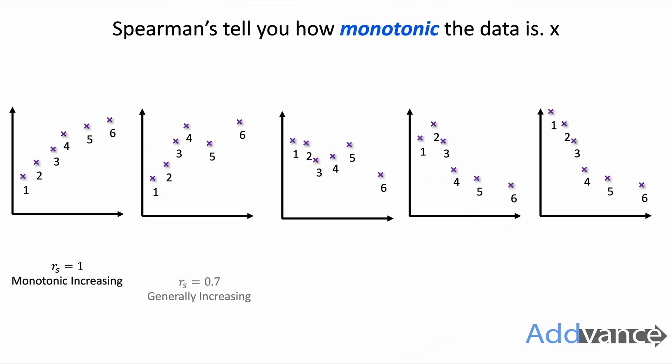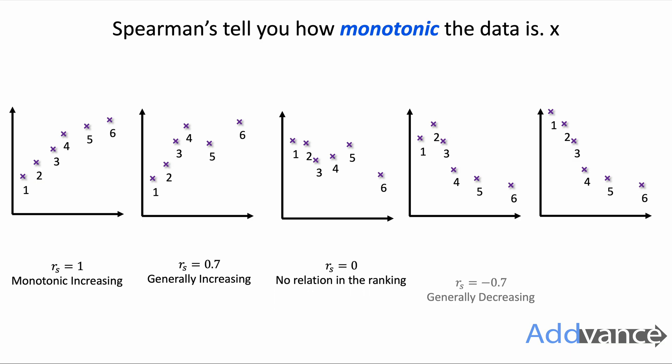Spearman's rank correlation coefficient tells you how monotonic the data is. If Spearman's is a perfect value of one, it is monotonic increasing. If it's a decimal between zero and one, it is generally increasing. If it's zero there is no relation in the data. If it's a negative decimal it's generally decreasing, and if it's a value of minus one exactly, it is monotonic decreasing.